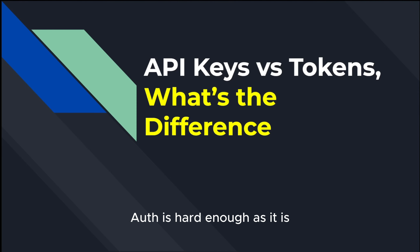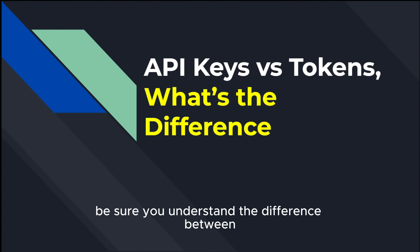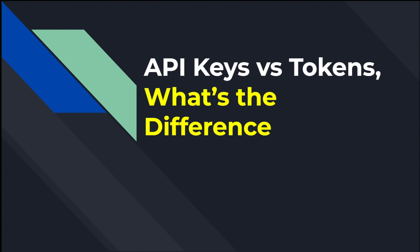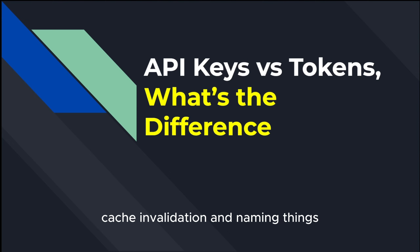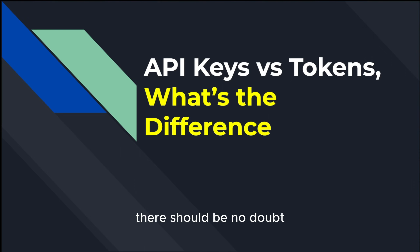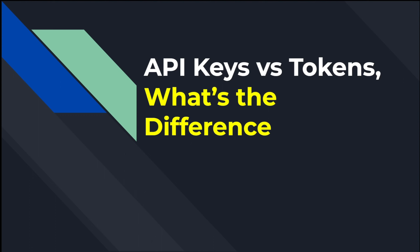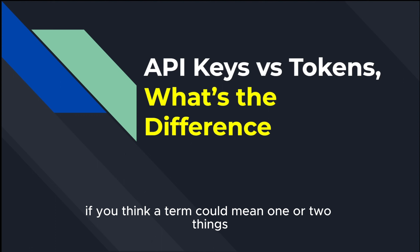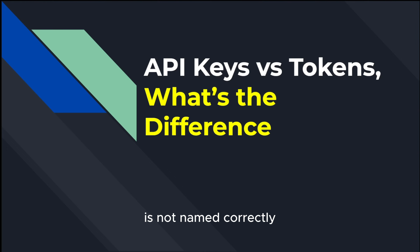Auth is hard enough as it is. Be sure you understand the difference between the two primary modes of authentication: API keys and tokens. In computer science, there are two hardest problems: cache invalidation and naming things. What makes naming things difficult is being clear yet concise — there should be no doubt about the meaning of a variable, term, function, or class. If you think a term could mean one or two things, it's not named correctly. Such is the case with API key and token.